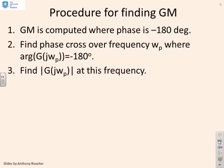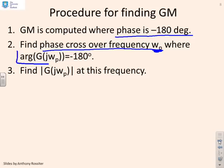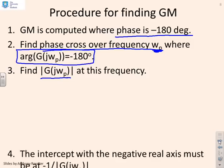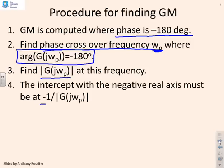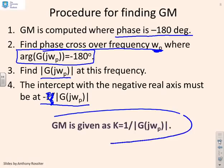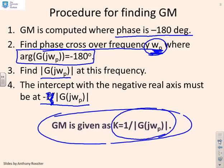The procedure for finding the gain margin: first, find the phase crossover frequency ωp by solving the argument of G(jωp) equals minus 180 degrees. Then find the gain of the system at that frequency, which is the modulus of G(jωp). The intercept with the negative real axis is minus |G(jωp)|, and therefore the gain margin is given by 1 over the modulus of G(jωp). So: find ωp first, then apply this formula.